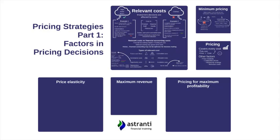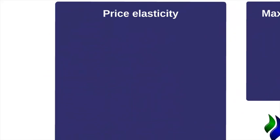We're going to look at other factors that can impact pricing, looking at price elasticity. Price elasticity is generally called the price elasticity of demand, and this is essentially when you've got a situation where your price is equal to your supply, and any increase in the price causes a decrease in the supply and any decrease in the price causes an increase in the supply.